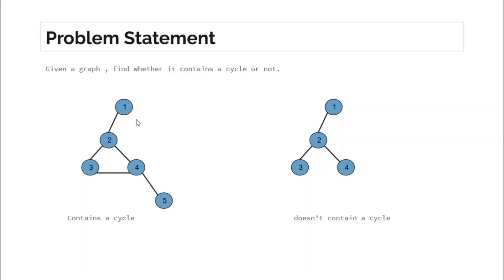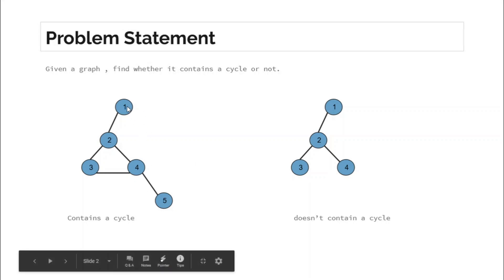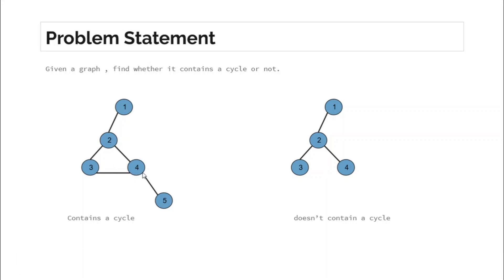Take the example of nodes one and four. There is a path one → two → four, and there exists another path one → two → three → four. So there are two ways to reach four from node one. If we remove the cycle edge, there would be a unique path. This is a property of a tree: for each pair of nodes there exists a unique path, while if the graph contains a cycle, this is not the case.